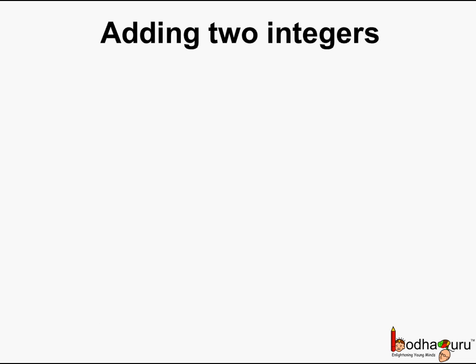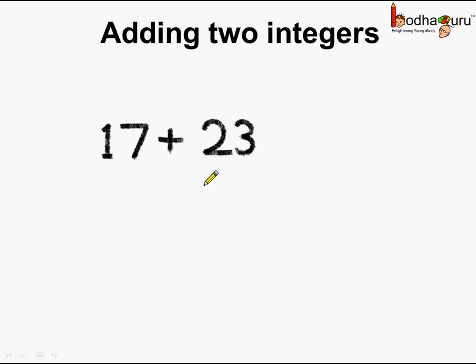Now let us try adding two integers. First, let us add 17 plus 23. Here we see both the integers are positive, that is having the same sign. So we just add them and the answer is equal to 40.